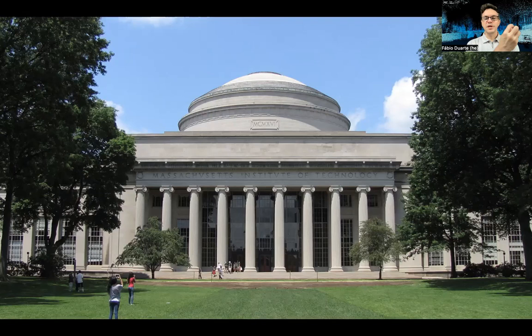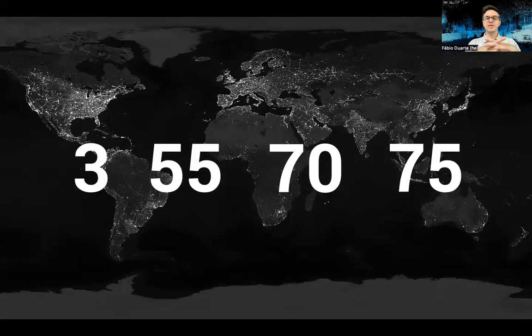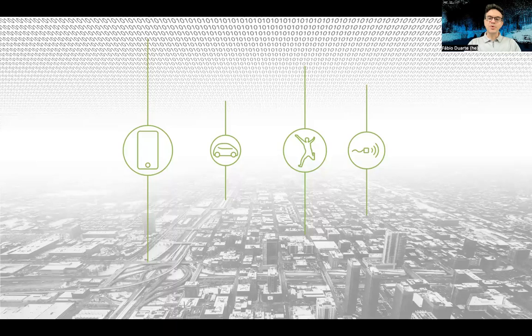Here at MIT, our mission is to do research but also bring this research to practice, so that we can improve the way we think but also design our cities, in our case at Sensible City Lab. Cities occupy only three percent of the Earth's crust. However, more than half of the world population lives in cities and we are responsible for more than 70 percent of energy consumption and 75 percent of CO2-related emissions.